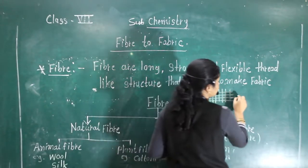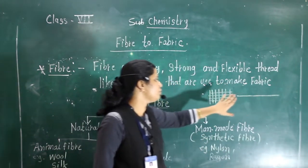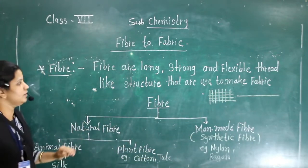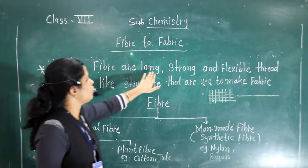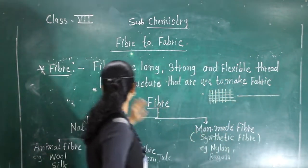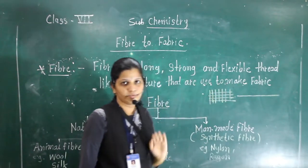Net-like structure you will see in that. What is this? These are the fibers and these fibers are used to make the fabric. Fiber means it is a long thread and this thread we are using to make fabric. Here the definition is written.